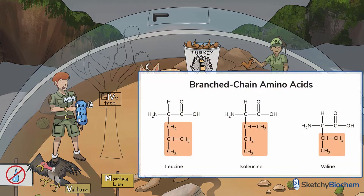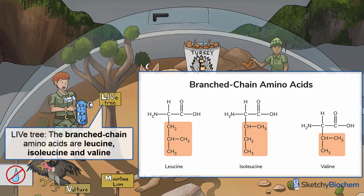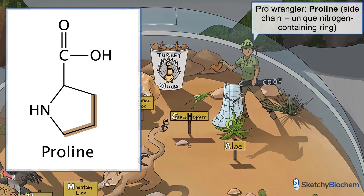Rest assured that this tree is, in fact, alive. L, I, and V on this branchy tree stands for the branched-chain amino acids leucine, isoleucine, and valine, respectively. We used a professional wrangler to represent proline, which has a unique sidechain consisting of a five-membered nitrogen-containing ring. The cyclic structure of proline creates conformational rigidity, meaning proline is basically stuck in one position all the time.